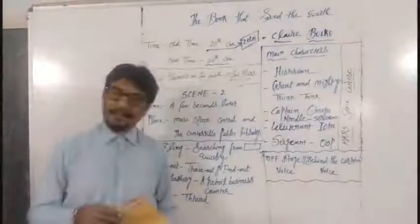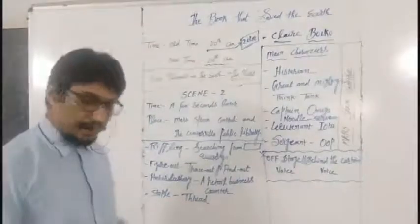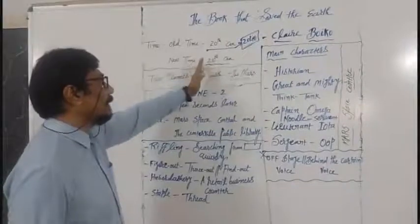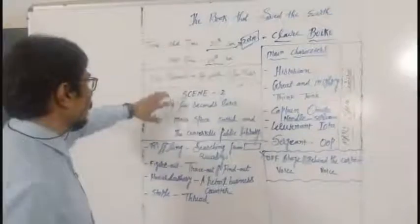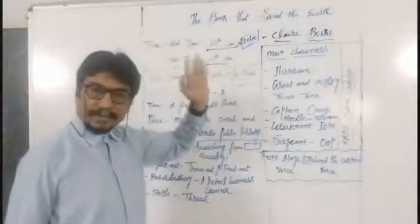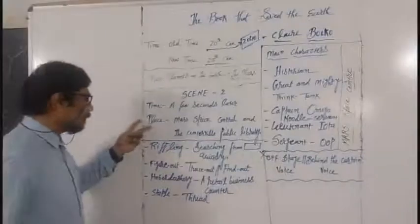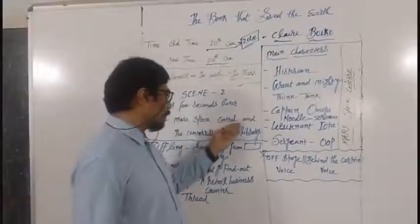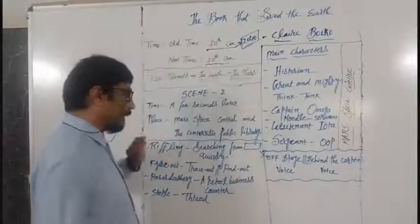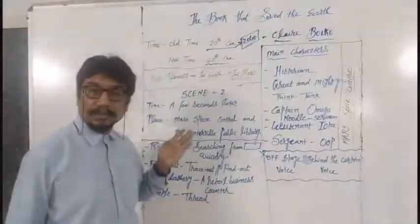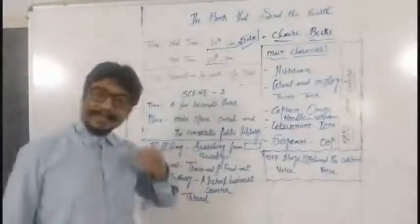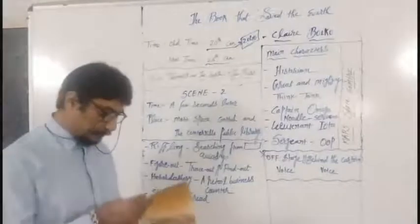Dear friends, let's move ahead to the second scene of the last segment lesson. The book that saved the earth was there in the second lesson. Time is set in the 20th century. They were looking back towards the earth in the second scene. What's the time? Few seconds later on, what happened in the first scene? Few seconds after the first scene, which place is discussed here?